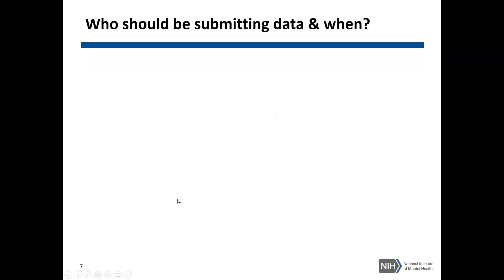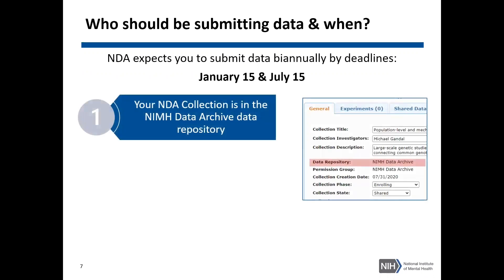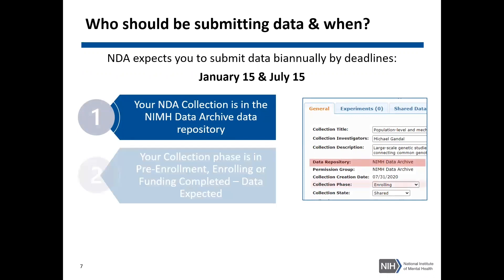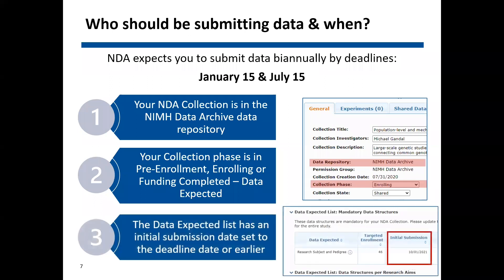So let's start off with who should be submitting data and when. NDA expects you to submit data biannually by the deadlines of January 15th and July 15th if your NDA collection is in the NIMH Data Archive data repository, your collection phase is in the pre-enrollment, enrolling, or funded completed data expected phase, and your data expected list has an initial submission date set to the deadlines of January 15th or July 15th or earlier.